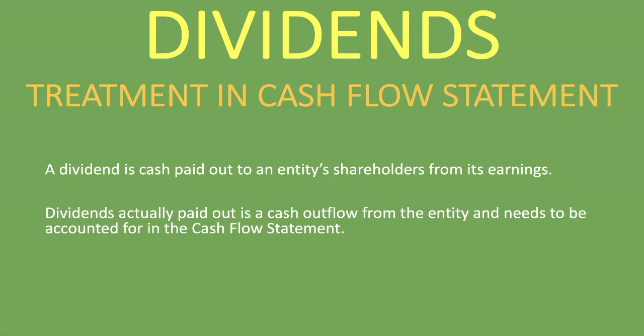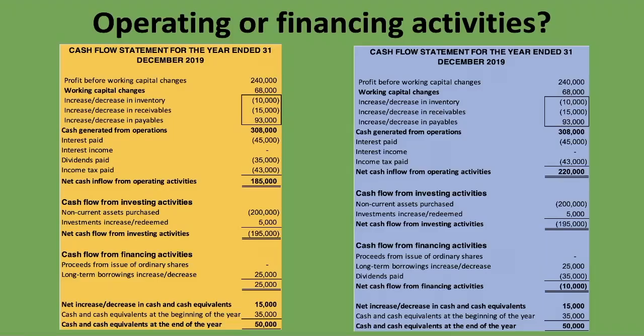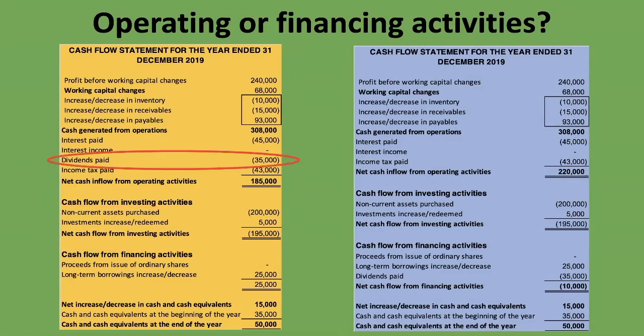Look at these two cash flow statements and tell me what the issue is with the treatment of dividends. On the left we have the exact same cash flow statement as the one on the right, but here you will find that dividends paid is under the operating activity section, while on the right it's under the financing activities section. Which one is correct?